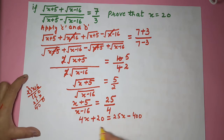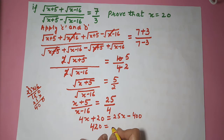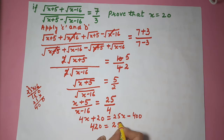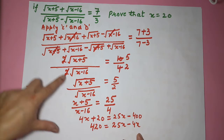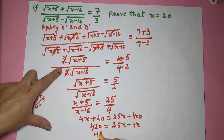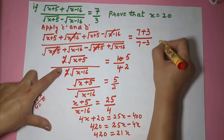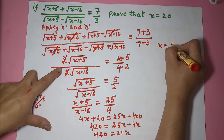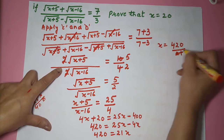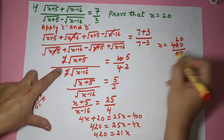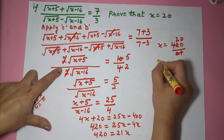Shift this term here and this here. We get 420 equal to 25x minus 4x. How much is that? 420 is equal to 21x. So your x is finally 420 upon 21, which gives x equal to 20.